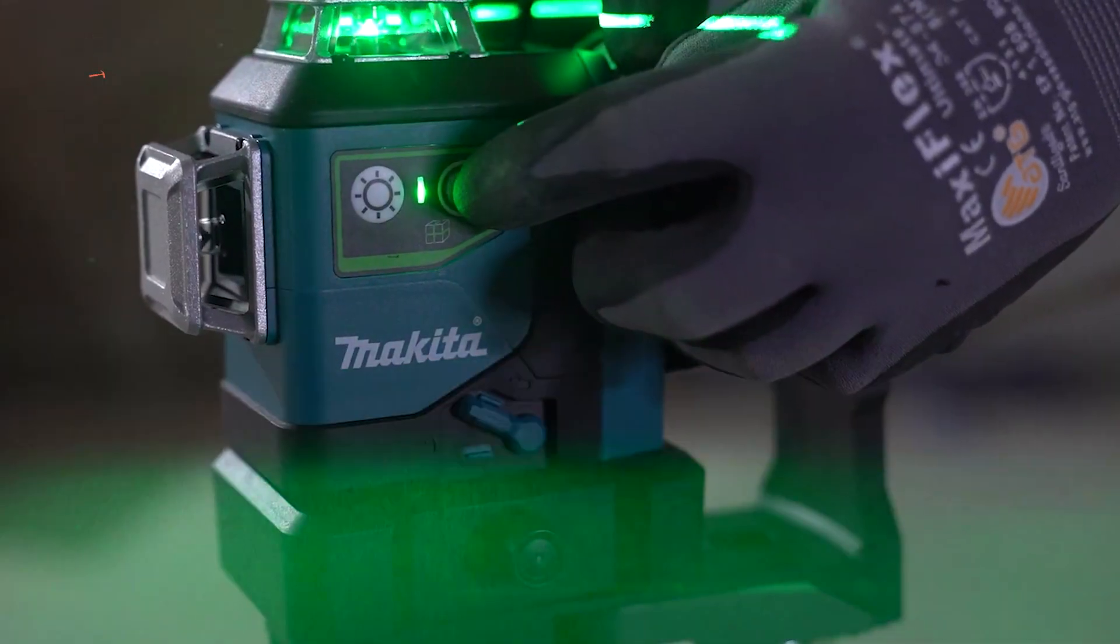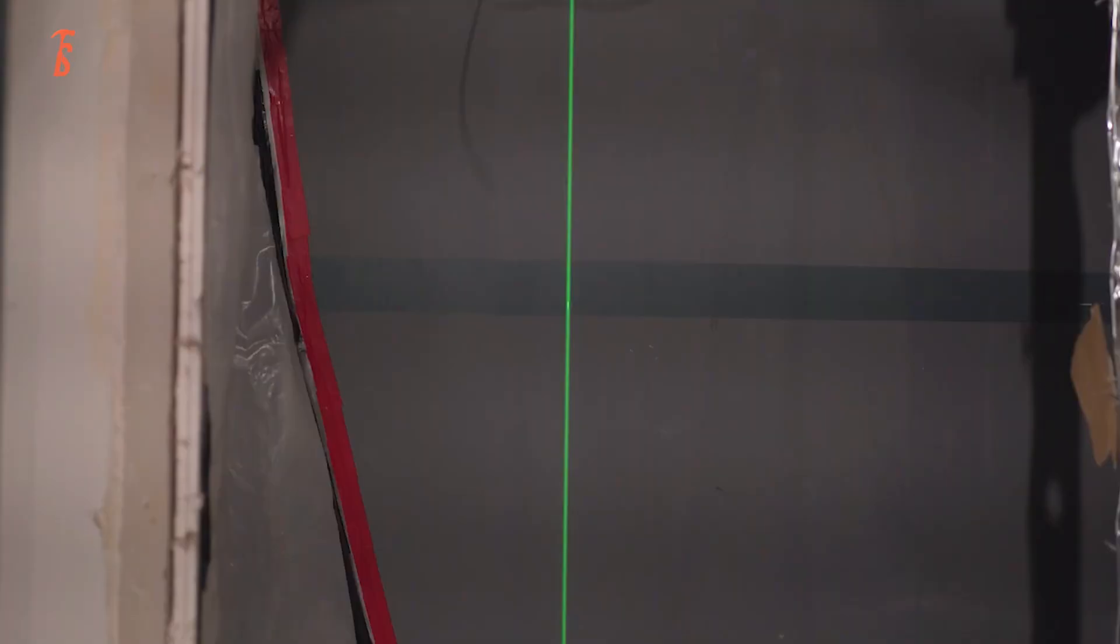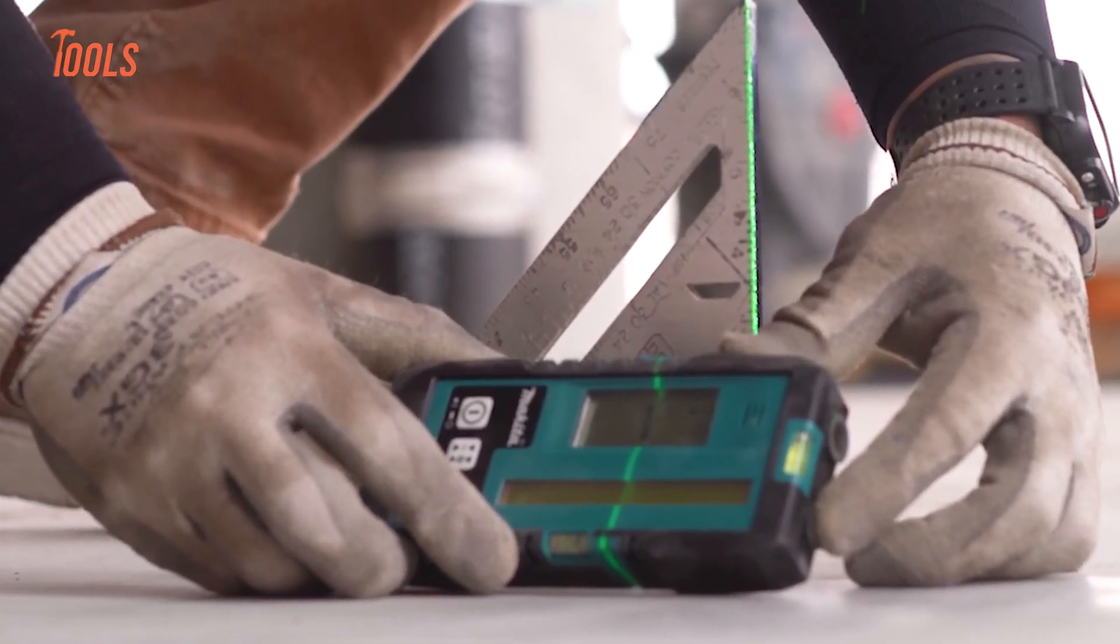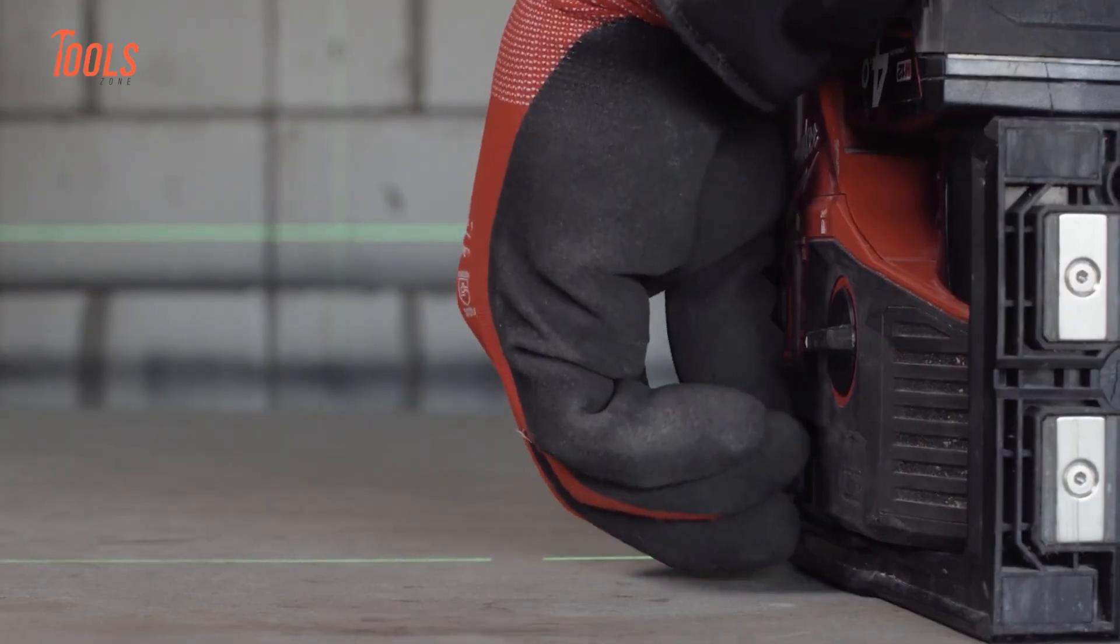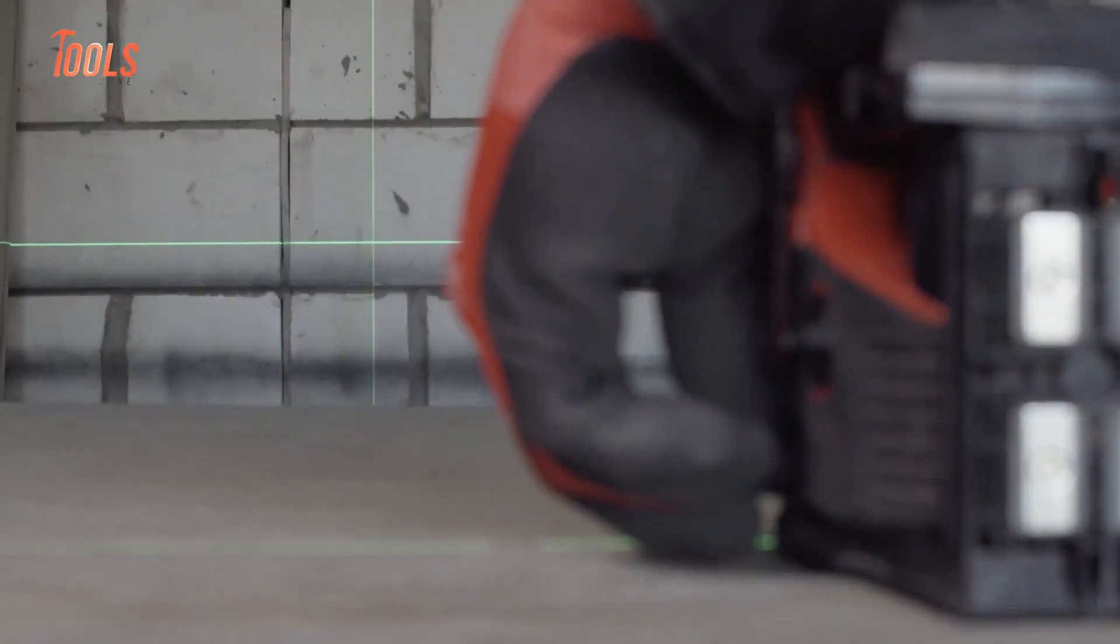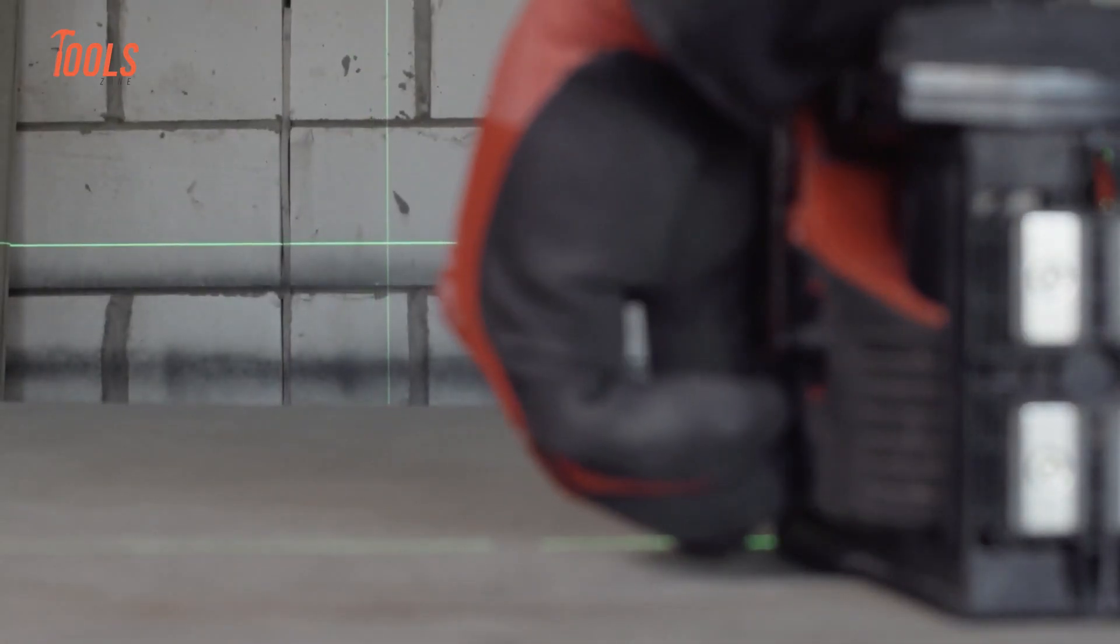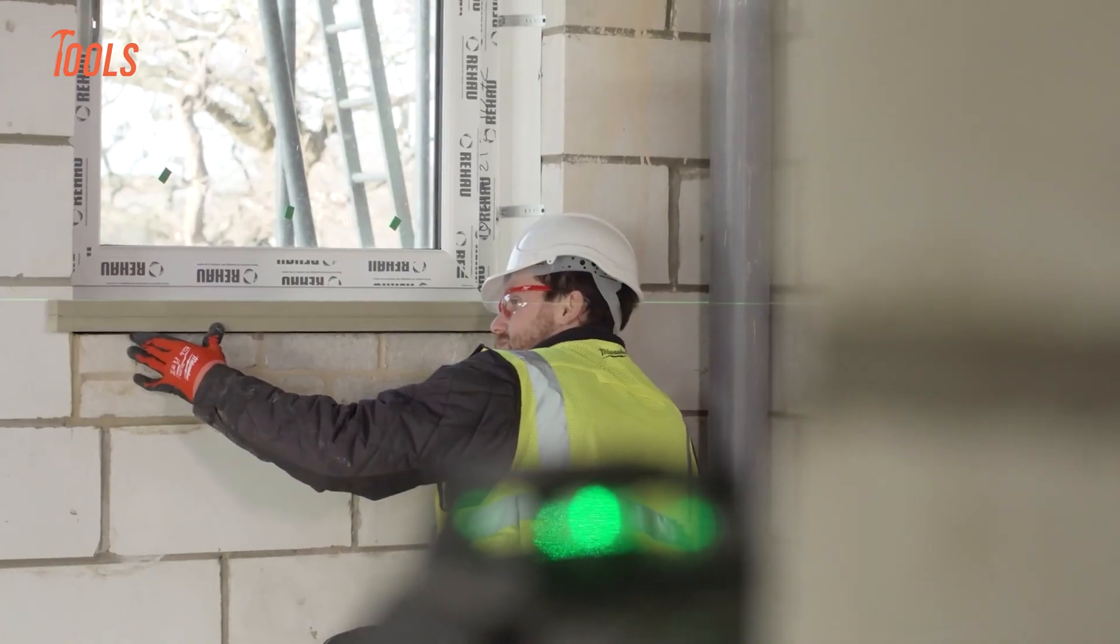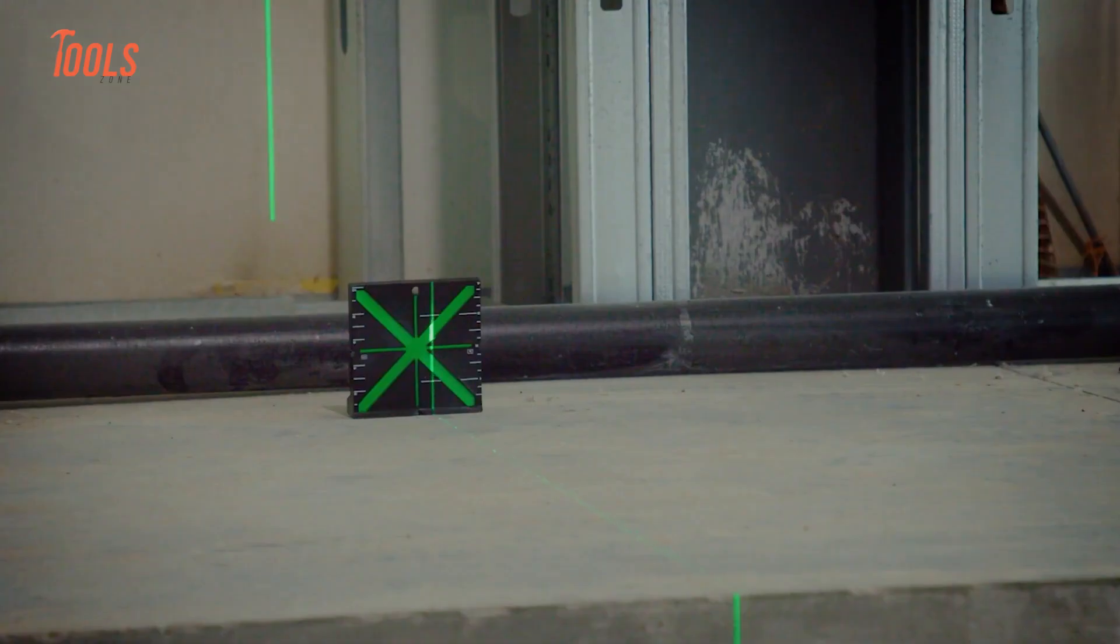Professional-grade laser levels, however, come with a self-leveling mechanism, usually a pendulum system or electronic gyroscope. This allows the device to automatically adjust itself if it's slightly tilted, as long as it's within a certain angle range. That means you can set it down on an uneven surface, and it will instantly find perfect level on its own.